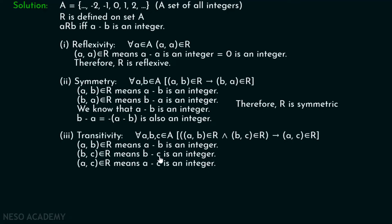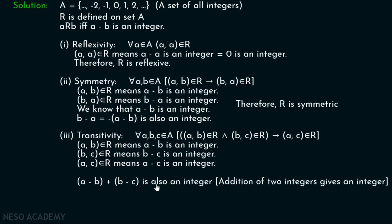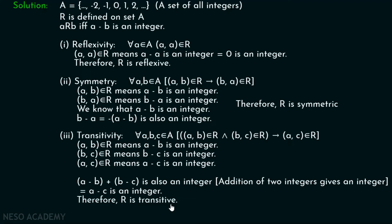Let's take the addition of these two: (A minus B) plus (B minus C). We know that the sum of two integers is also an integer. And (A minus B) plus (B minus C) is actually equal to A minus C. Since A minus B plus B minus C is an integer, therefore A minus C is also an integer. Therefore R is transitive.